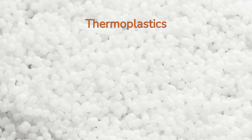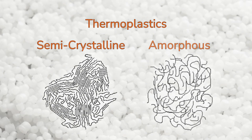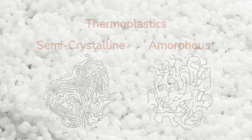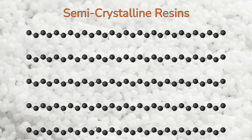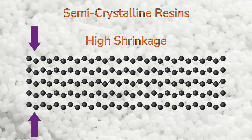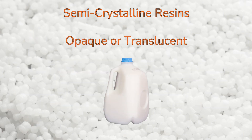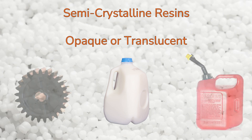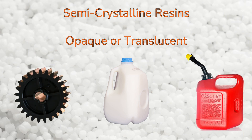Thermoplastic polymers can be categorized as semi-crystalline or amorphous. Semi-crystalline polymers possess long-range molecular order or crystalline structures, while amorphous polymers lack long-range molecular order. Semi-crystalline polymers are characterized by ordered arrangement of the polymer chains, allowing for close packing of molecules. Intermolecular forces pull the polymer chains close together, resulting in high shrinkage. Tightly packed molecules do not allow for light to pass through the material, which is why semi-crystalline resins are optically opaque or translucent.